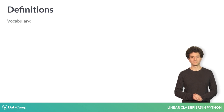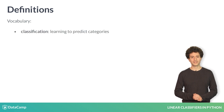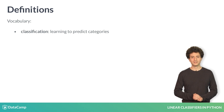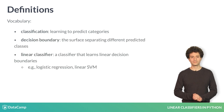Here's a list of some important vocabulary we'll be using in the course. Classification is supervised learning when the y values are categories. This is in contrast with regression, where we're trying to predict a continuous value. We've defined decision boundaries and linear classifiers on the previous slide.